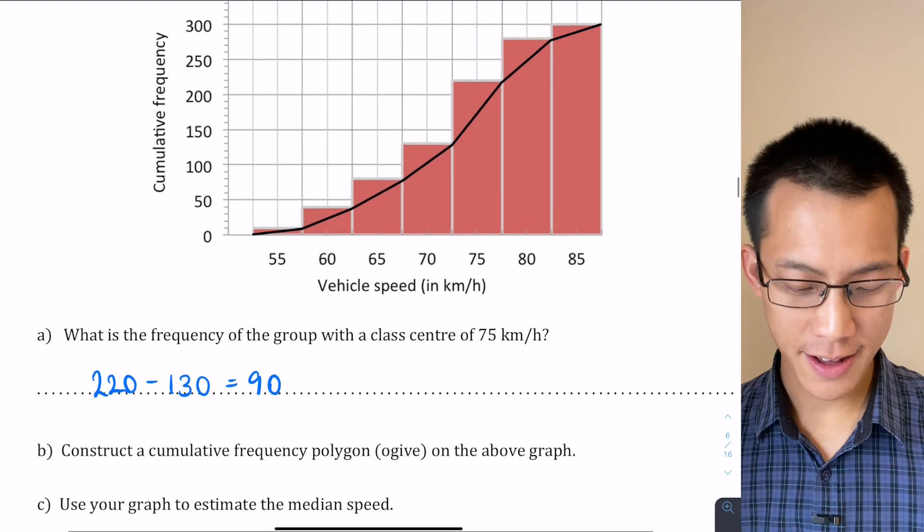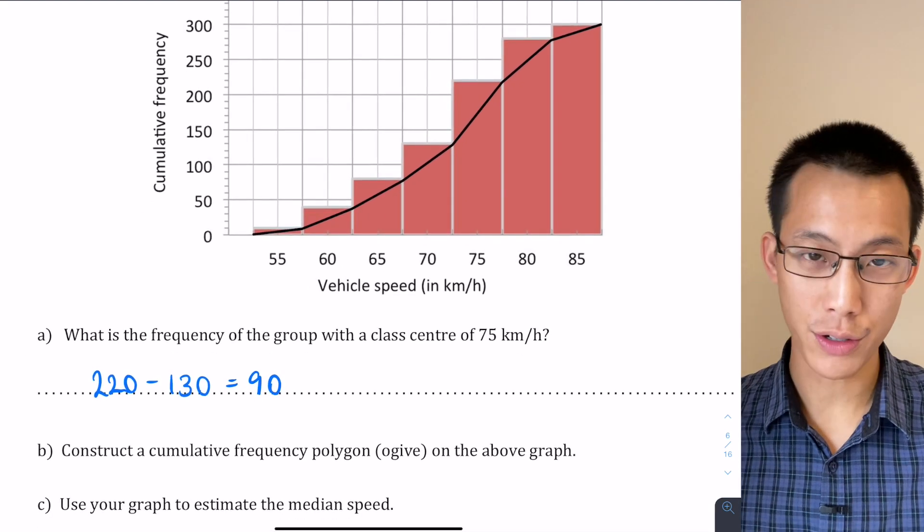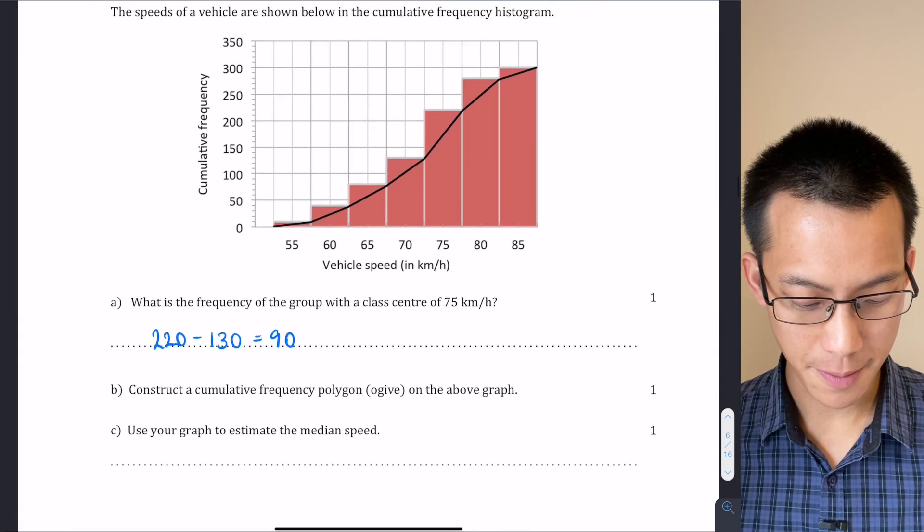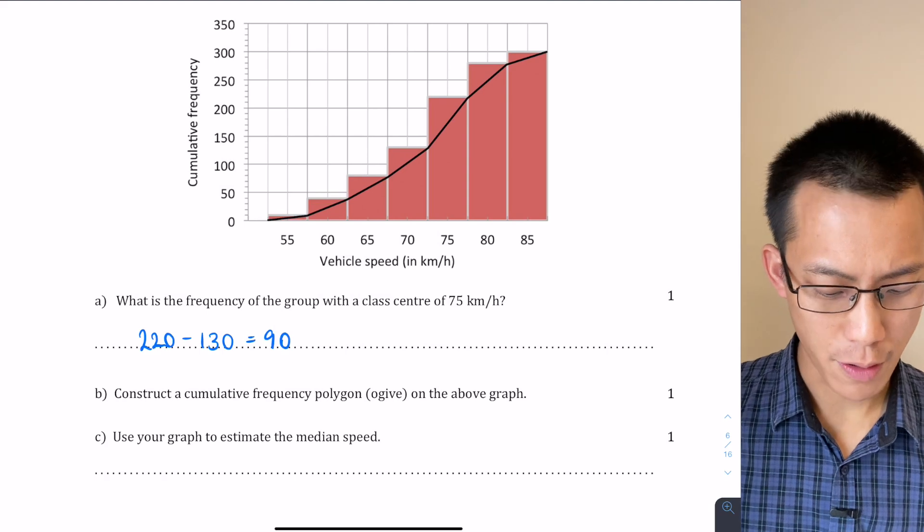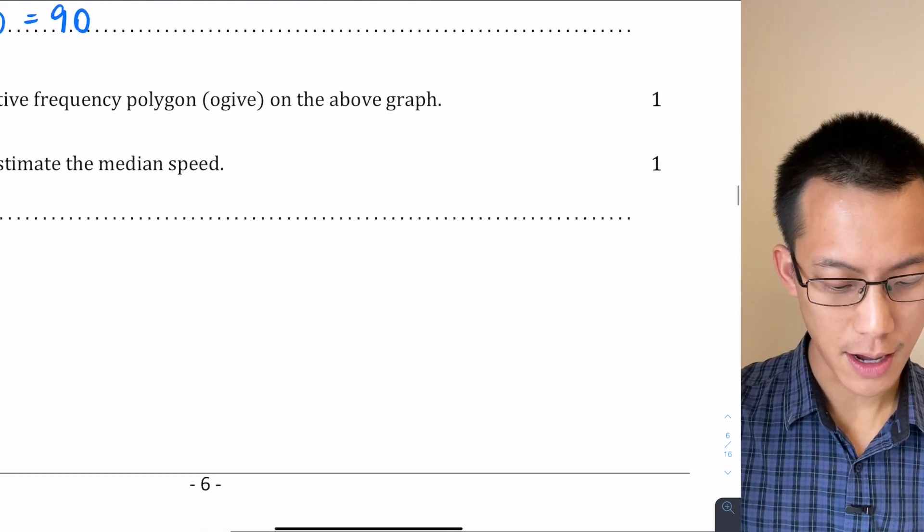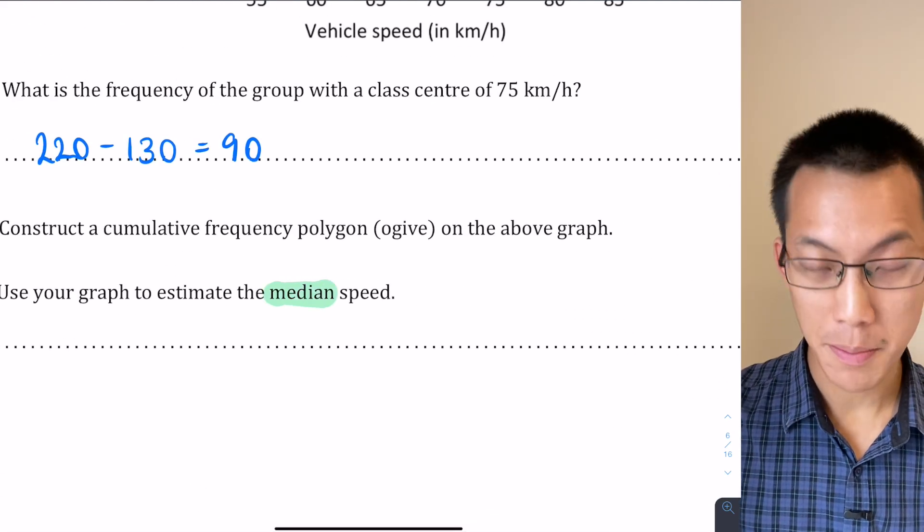And now I'm going to use that, so it's important that you get this right because you're going to get a result from it in the next part. I'm going to use that graph to estimate the median speed. Now we really need to pause for it because there was a common mistake here that I need to highlight. So what does median mean?